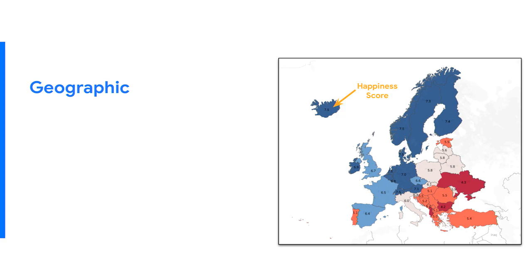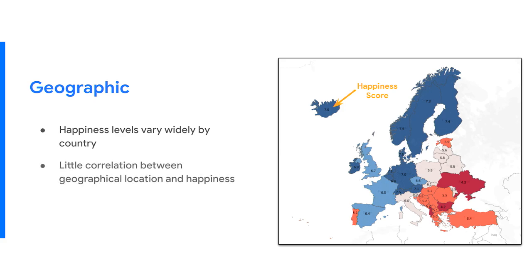It's important that you only use text on screen in a short and concise manner to highlight the main points you're discussing. After introducing the visual, I can dive into the analysis. We have our first bullet point: happiness levels vary widely by country. As it appears, my speaker notes might say: as high and low scores are spread sporadically throughout the map, there is little correlation between geographical location and happiness. We concluded that geographical location alone was not a strong indicator of happiness. As I discuss and explain what we were looking at, the overall text on screen only populated as I began to discuss it — so the audience knew exactly where to look and what to be listening to.